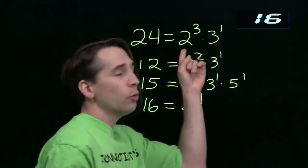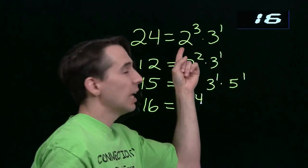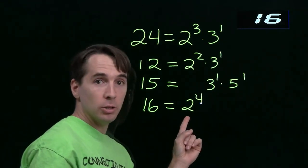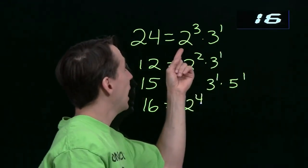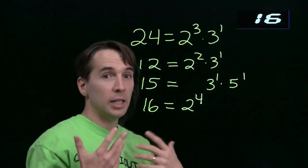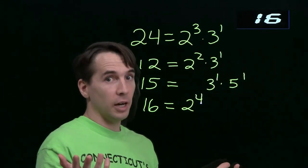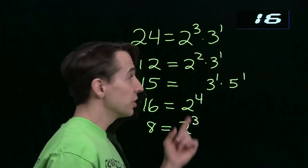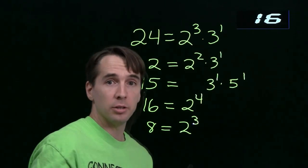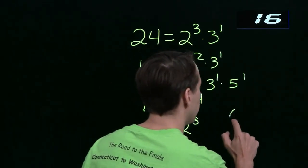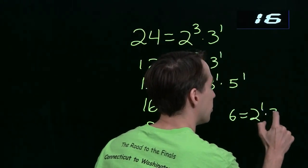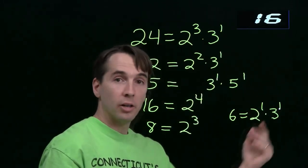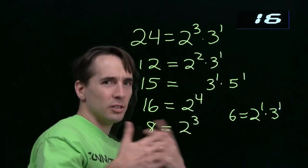Now we know how to find the divisors of 24 from its prime factorization. Any divisor of 24 can have at most three 2s and at most one 3. It can't have extra primes, too many 2s, or too many 3s. But any number that has at most three 2s, at most one 3, and no other primes is a divisor of 24. For example, 8 is just 2 cubed — it doesn't have more than three 2s and no other primes besides 2 and 3. And 6, that's 2 to the first times 3 to the first — it doesn't have more than three 2s or more than one 3, so 6 is also a divisor of 24.